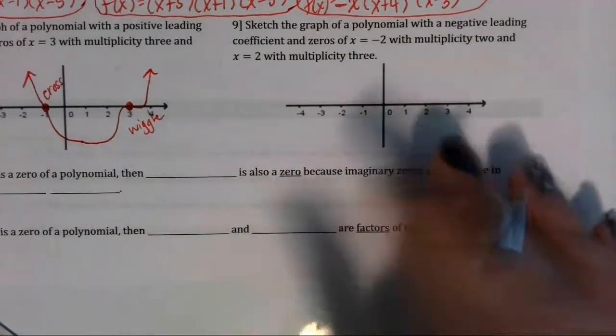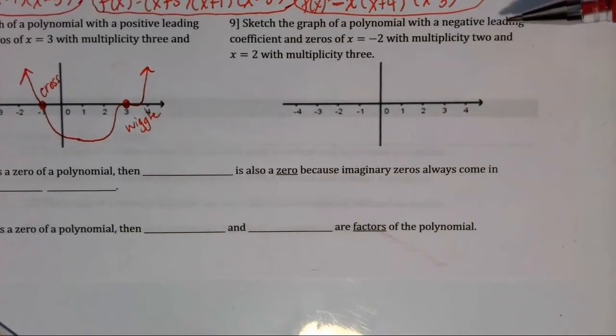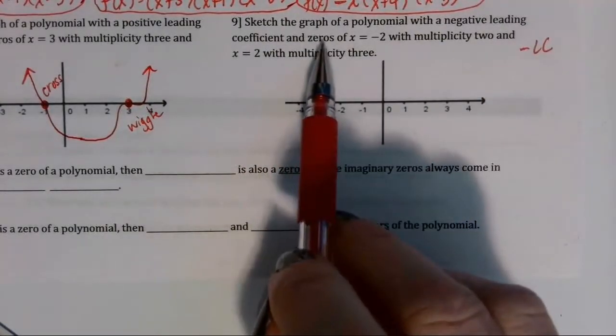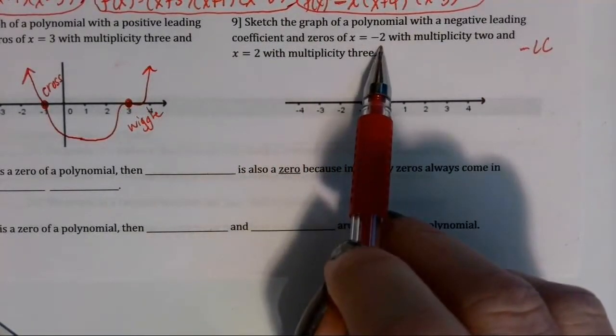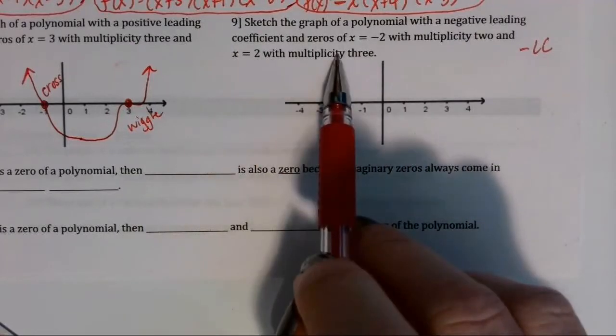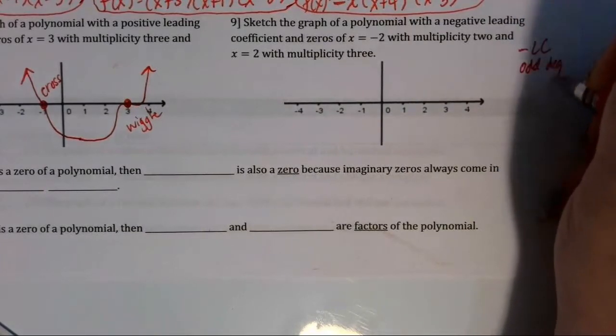And number 9, we want to sketch the graph of the polynomial that has a negative leading coefficient and the zeros are negative 2 with multiplicity 2 and x equals positive 2 with multiplicity 3. 3 plus 2 is 5, that's an odd degree.